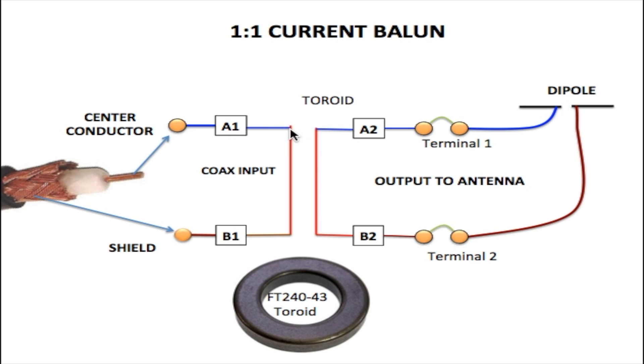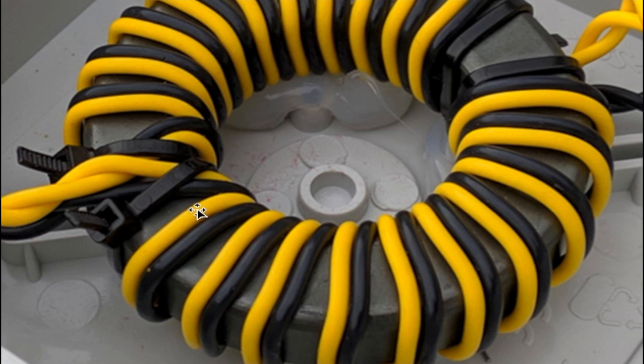This wire from A1 is wrapped around the toroid and so is B1, and you wrap them together like this. One of these wires goes back to your shield and the other wire goes to your middle conductor.